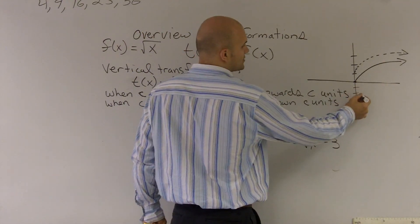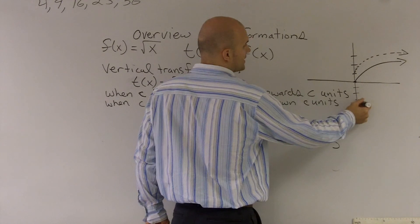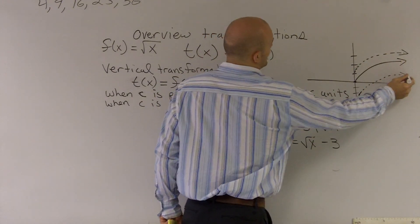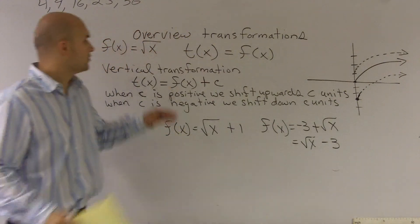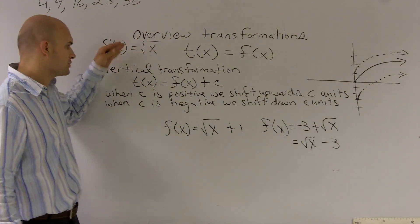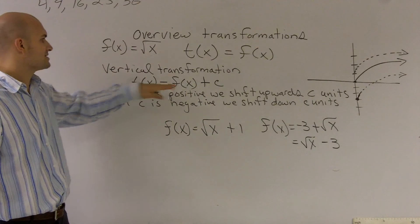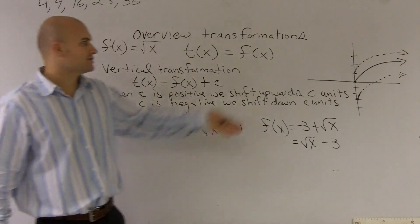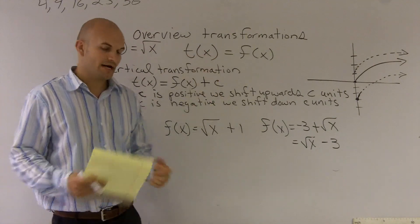So we're looking through an overview of transformations. When you're looking for vertical transformations, you can see it's going to be the c that's adding to your function that is going to give you your vertical shift up or down.